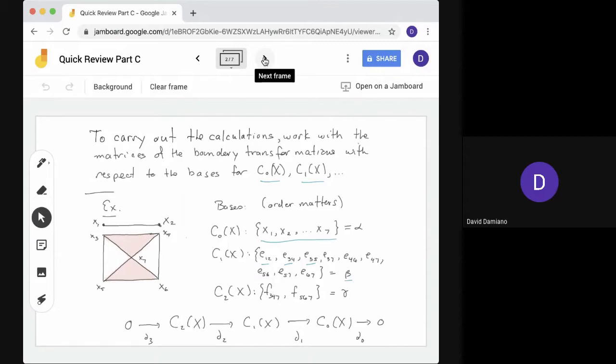Then for c2, we do the same thing. We have two faces, so it's relatively straightforward. One face, 3, 4, 7, 5, 6, 7. And again, notice those are increasing integers, 3, 4, 7, 5, 6, 7. This gives us a basis gamma for the two chains.